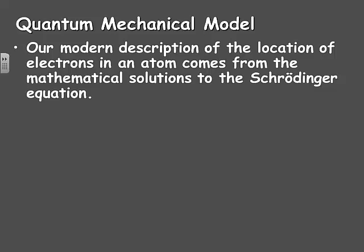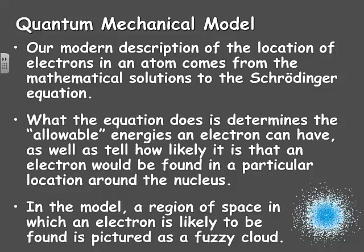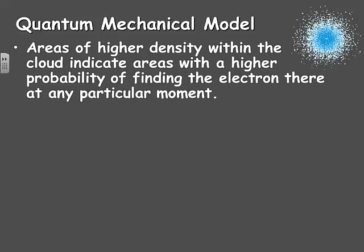Our modern description of the location of electrons in an atom comes from the mathematical solutions to something known as the Schrödinger equation. What the equation does is determines the allowable energies an electron can have, as well as tell us how likely it is that an electron would or could be found in a particular location around the nucleus. In the model, a region of space in which an electron is likely to be found is pictured as a fuzzy cloud, as seen here. Areas of higher density within the cloud indicate areas with a higher probability of finding the electron there at any particular moment in time.